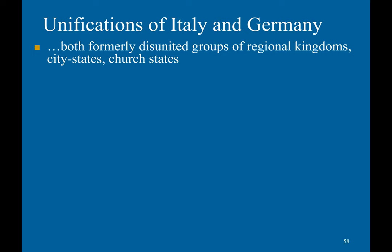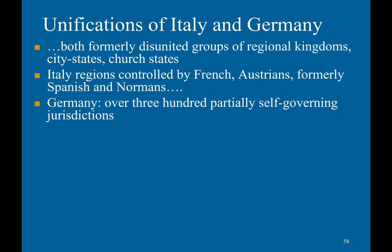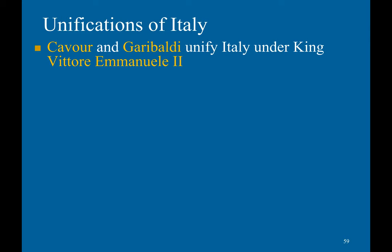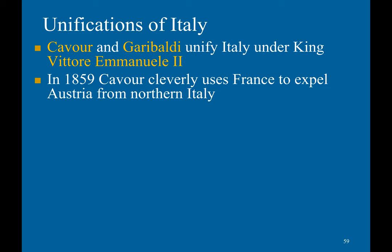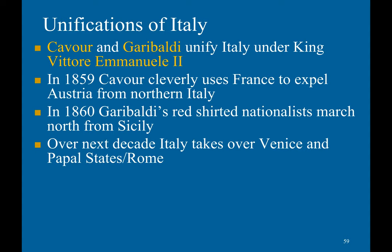Nationalism would not be stopped, as you had the unification of Italy and Germany — both formally disunited groups of regional kingdoms, city-states, and church-states. Italian regions were controlled variously by the French, Austrians, formerly Spanish, and Normans. In Germany there were over 300 partially self-governing jurisdictions. However, national sentiment began bubbling up and developed into the idea of unification. Cavour and Garibaldi unified Italy under King Victor Emmanuel II. In 1859, Cavour cleverly used France to expel Austria from northern Italy. In 1860, Garibaldi's red-shirts and nationalists marched north from Sicily. Over the next decade, Italy took over Venice, the Papal States, and Rome. This map depicts the slow, gradual process of Italian unification.